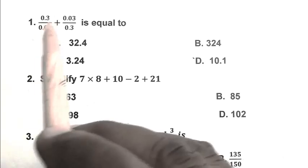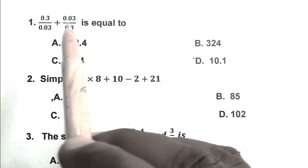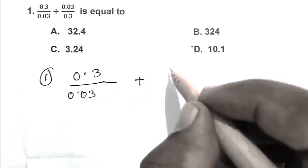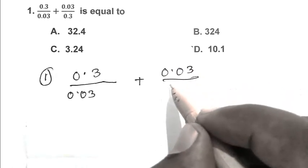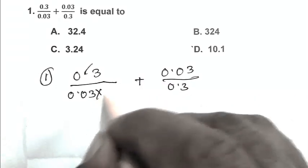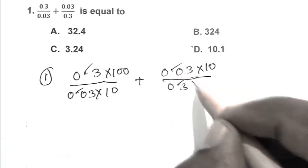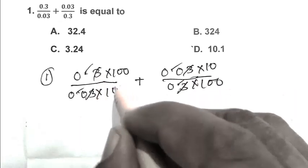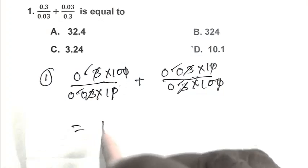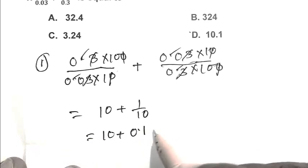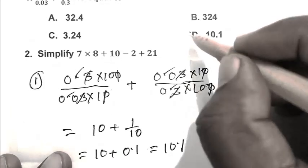Question number 1: 0.3 upon 0.03 plus 0.03 upon 0.3 is equal to? Eliminating the decimal point, we get 10 and 100 respectively. So 3, 3, 3, 3 cancel out. We get 10 plus 1 upon 10, that is 10 plus 0.1, which equals 10.1. So D is the right answer.